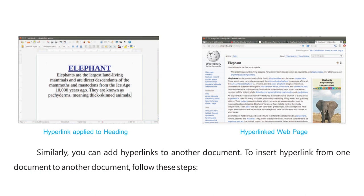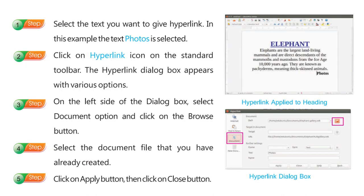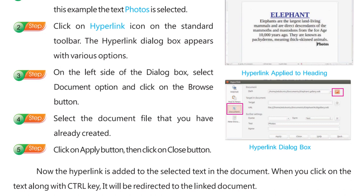To insert a hyperlink from one document to another document, follow these steps. Step 1: Select the text you want to give a hyperlink. In this example, the text 'Photos' is selected. Step 2: Click on the hyperlink icon on the standard toolbar. The hyperlink dialog box appears with various options. Step 3: On the left side of the dialog box, select the Document option and click on the Browse button. Step 4: Select the document file that you have already created. Step 5: Click on the Apply button, then click on the Close button. Now the hyperlink is added to the selected text in the document.